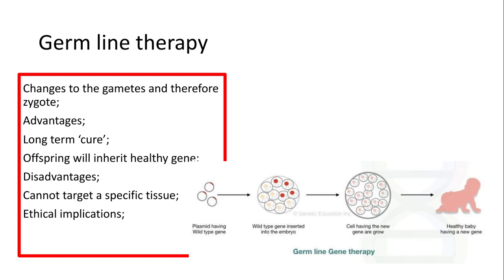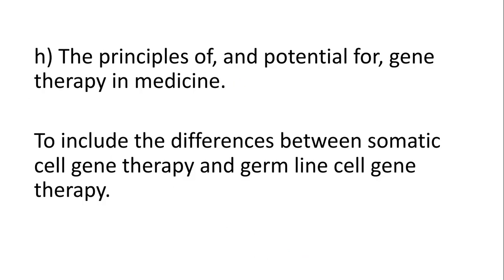However, you can't target a specific tissue here, and there are massive ethical implications. At the moment we're not allowed to carry out this procedure because it could lead to things like designer babies, where people are specifically asking for certain traits within their offspring. So that's everything we need to know about somatic and germline cell therapy. Good luck with your exams and don't forget — don't use the words it, they, amount, and size. Good luck!